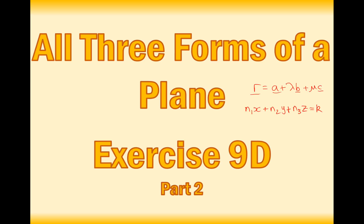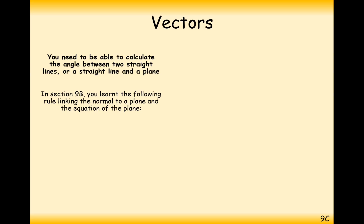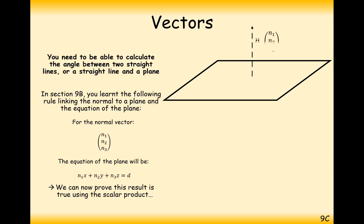What we're going to look at now is the scalar product form of a vector. We'll first show you how this comes about. If we've got our normal vector here, we've got n1, n2, n3, and we can define the plane by this vector.